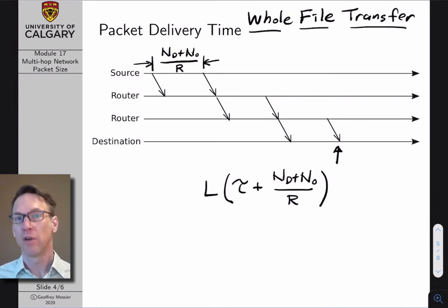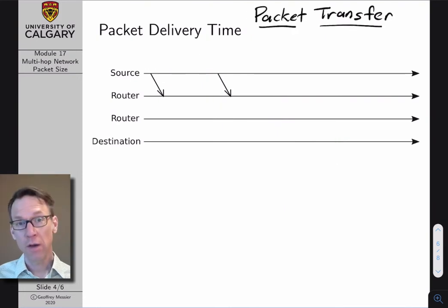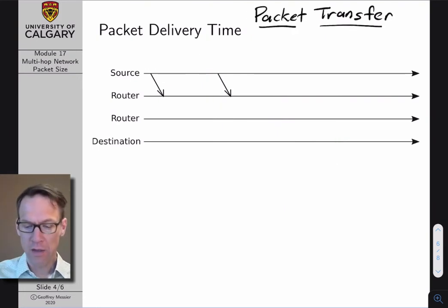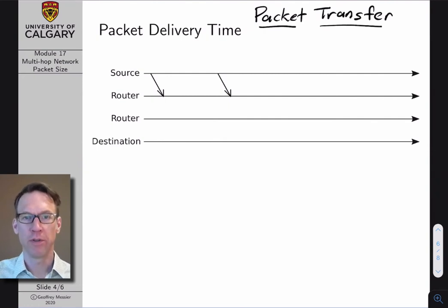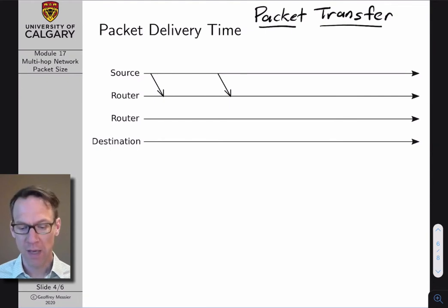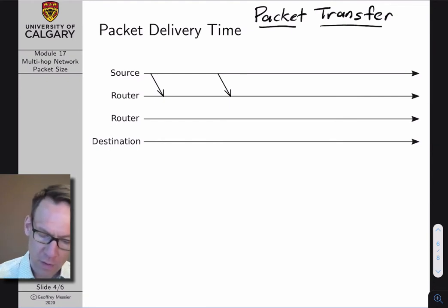So how do we do better? It turns out we can improve delivery time in a multi-hop network by simply dividing the data file into packets.